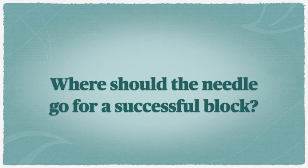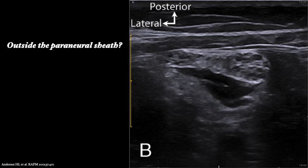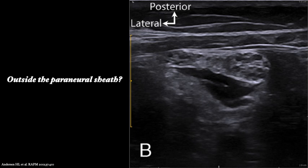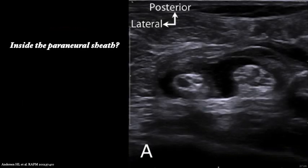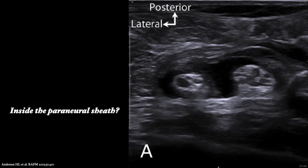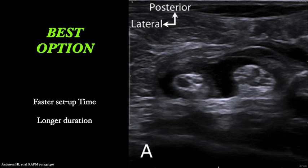This is important for a popliteal sciatic nerve block. Where should we place a needle for a successful block? Hopefully most agree that intrafascicular needle placement and injection is bad. So is it more beneficial to inject outside the perineural sheath? Studies show that there is a long setup time and decreased duration if injected outside the perineural sheath — this is not ideal. Injecting inside the perineural sheath shows faster setup time and longer duration. This is the best option.